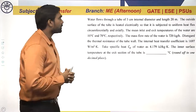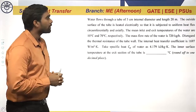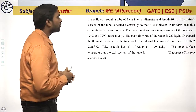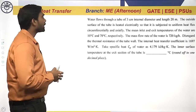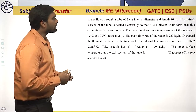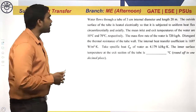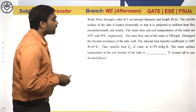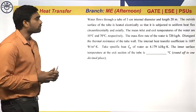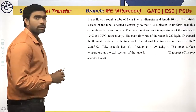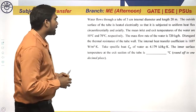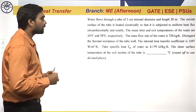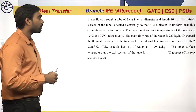Water flows through a tube of 3 centimeter internal diameter and length 20 meter. The outside surface of the tube is heated electrically so that it is subjected to uniform heat flux circumferentially and axially. The mean inlet and exit temperature of the water are 10 degrees Celsius and 70 degrees Celsius respectively. The mass flow rate of the water is 720 kg per hour. Disregarding the thermal resistance of the tube wall, the internal heat transfer coefficient is 1697 watt per meter square kelvin. Take specific heat CP of water as 4.179 kilojoule per kg kelvin. The inner surface temperature at the exit section of the tube wall is to be found.